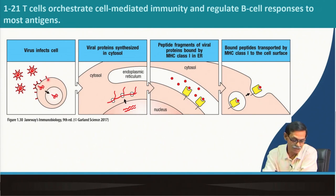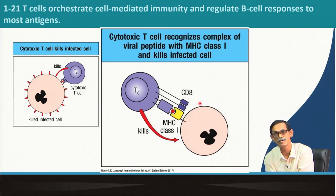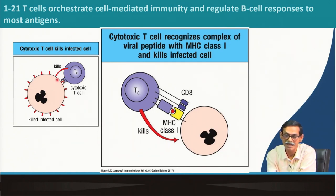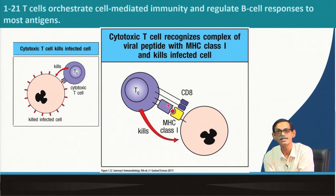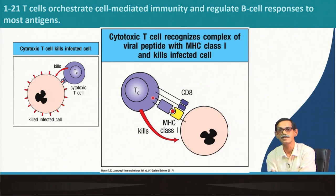The viral protein is expressed on the membrane of the virus-infected cell along with MHC class 1. The cytotoxic T cell recognizes this junction — the viral protein together with MHC class 1 is recognized by the T cell receptor. So any intracellular protein, or any protein synthesized inside the cell, is presented by MHC class 1, and cytotoxic T cells recognize MHC class 1.